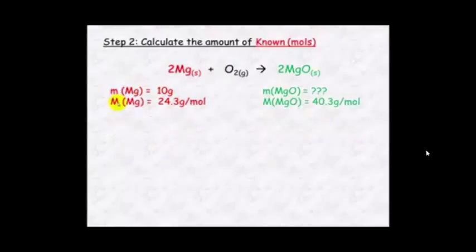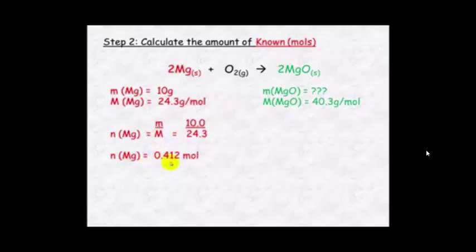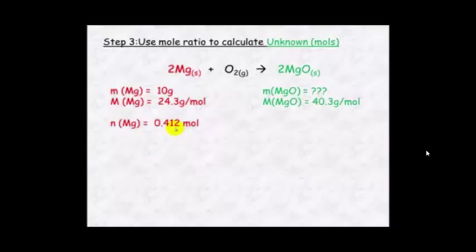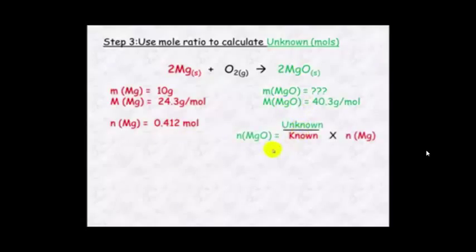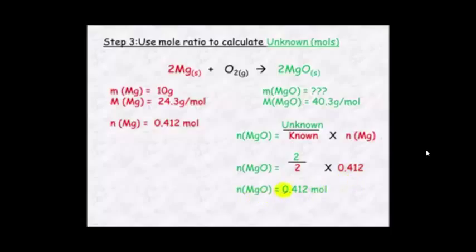We work out the number of moles of magnesium by n = m/M, which equals 0.412 mol. Now using the mole ratio — it's a 2 to 2 relationship — the number of moles of magnesium oxide will be the same. Using the formula: unknown/known × moles = 2/2 × 0.412, which equals 0.412 mol. Double-check: 2 magnesium creates 2 magnesium oxide — yes, the answers are the same, so that's correct.